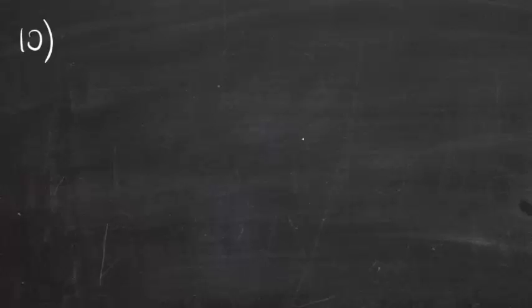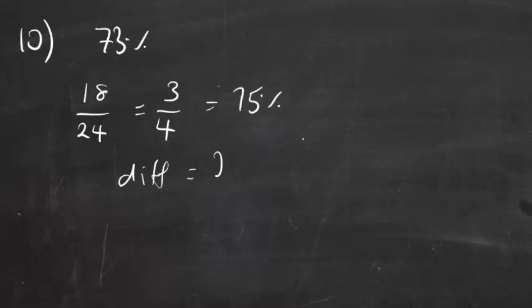Question: A pupil scored 73% in a test. In a later test, the pupil scored 18 out of 24. What was the difference between the percentage scores obtained in the two tests? Solution: We have 18 out of 24, which we need to cancel down. Divide top and bottom by 6, we get three quarters, which is 75%. The difference from 73 is just 2.